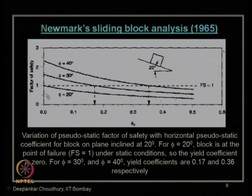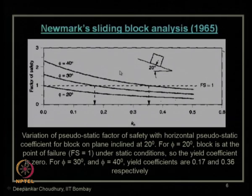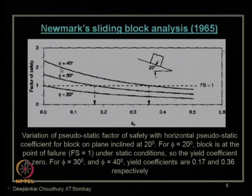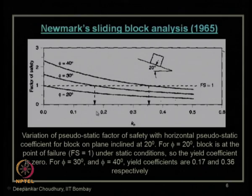We saw the variation of factor of safety for a finite slope of inclination 20 degrees with different phi values of 20, 30, and 40 degrees. For phi equal to 20 degrees, factor of safety will always be less than 1 because the slope inclination is also 20 degrees. For stability, phi must be greater than the slope angle. For higher phi values, the factor of safety is more than 1 at static condition when k_h equals 0, but as k_h increases, the factor of safety keeps decreasing. From this chart, you can find corresponding yield acceleration values for phi equals 30 or 40 degrees.